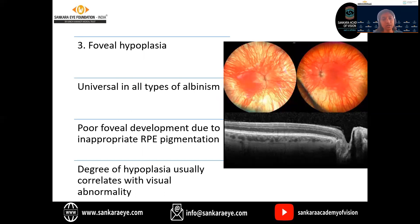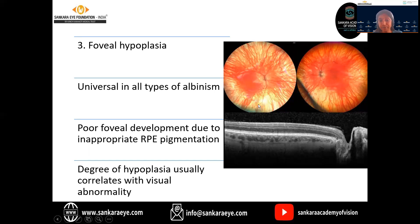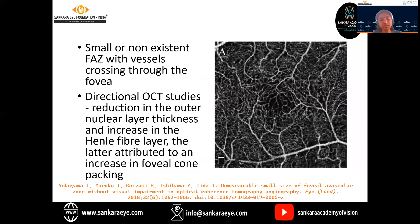Foveal hypoplasia is universal in all types of albinism. It is mainly due to poor foveal development due to inappropriate retinal pigment epithelial pigmentation. The degree of hypoplasia usually correlates with the visual acuity. Here you can see the fundus with absent foveal reflex, which is a classical feature of foveal hypoplasia. When we do an OCT, you will not be able to see the foveal pit, and the foveal depression will be absent. With OCT angiography, there will be a small or non-existent foveal avascular zone with vessels crossing through the fovea. Directional OCT studies have shown reduction of the nuclear layer thickness and increase in the Henle's fiber layer, the latter attributed to the increase in foveal cone packing.